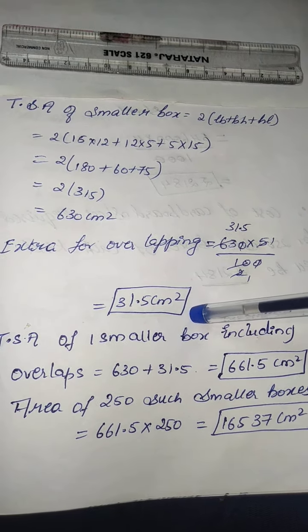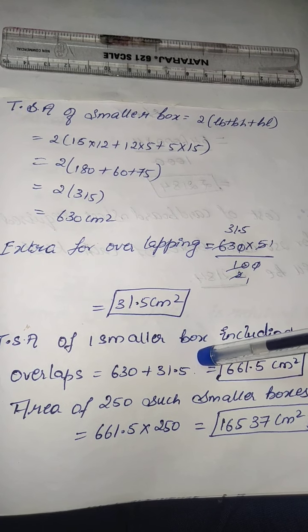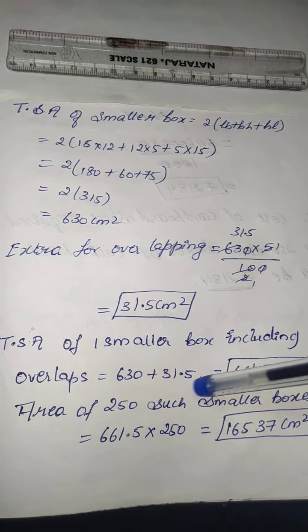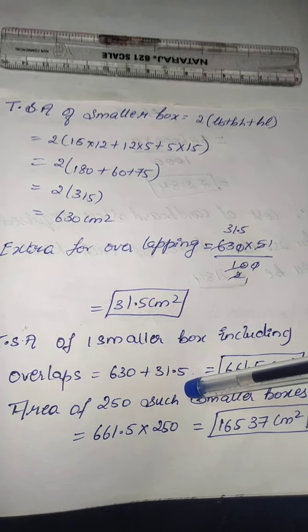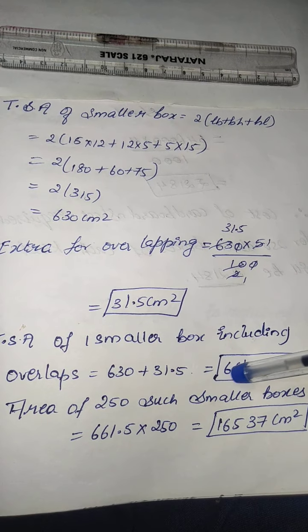So one TSA of one box including the overlaps becomes 630 plus 31.5. So on adding, you will get 661.5 centimeter square.